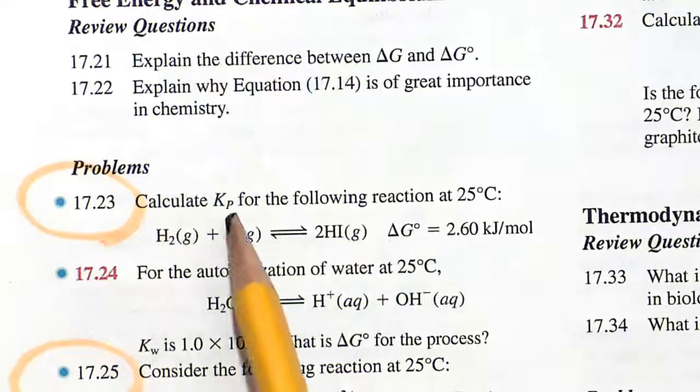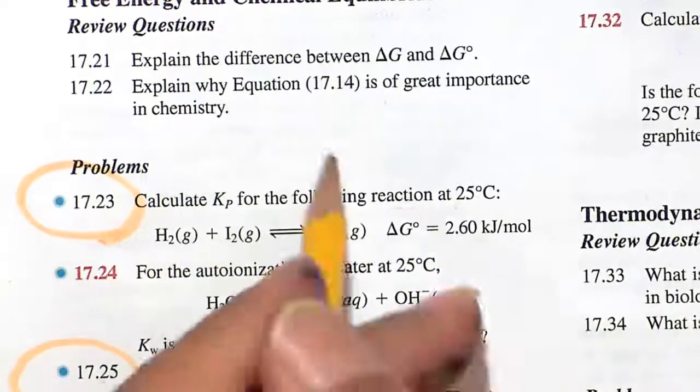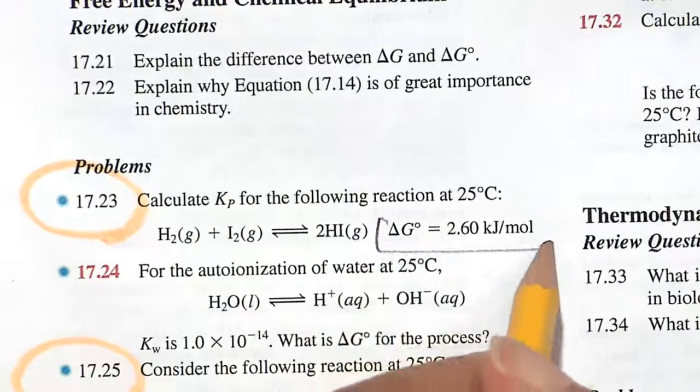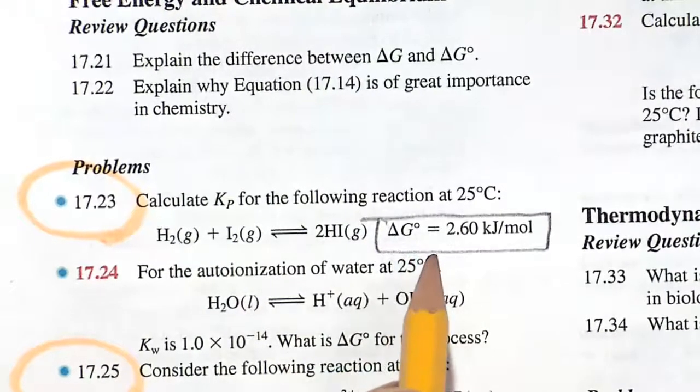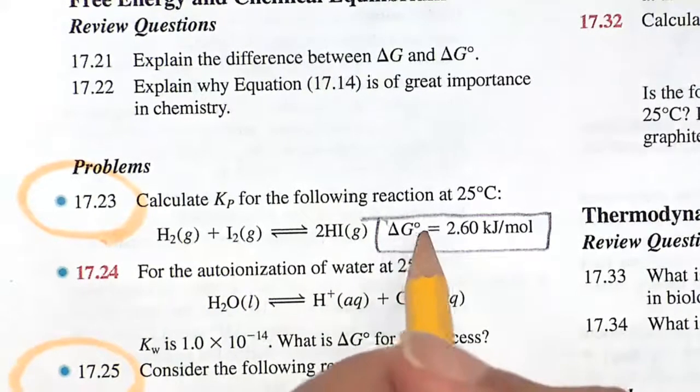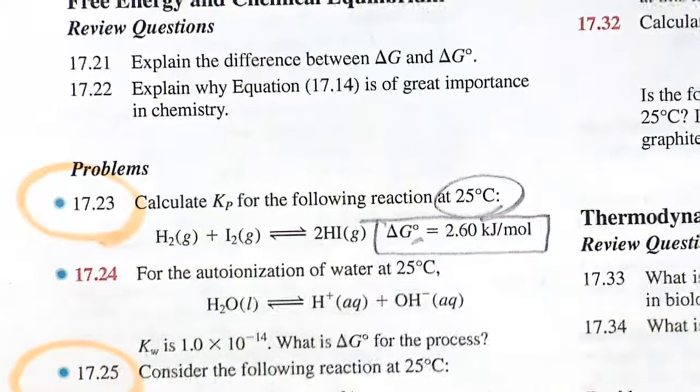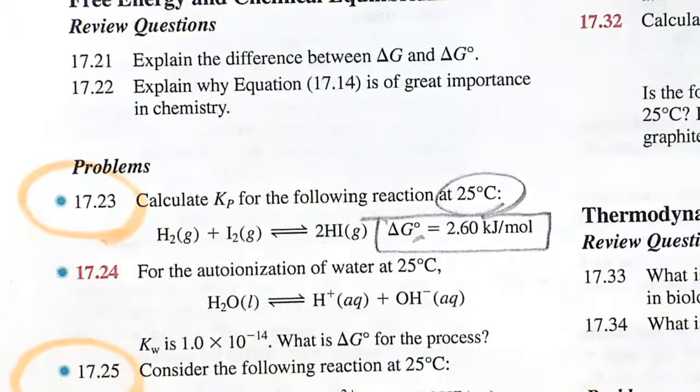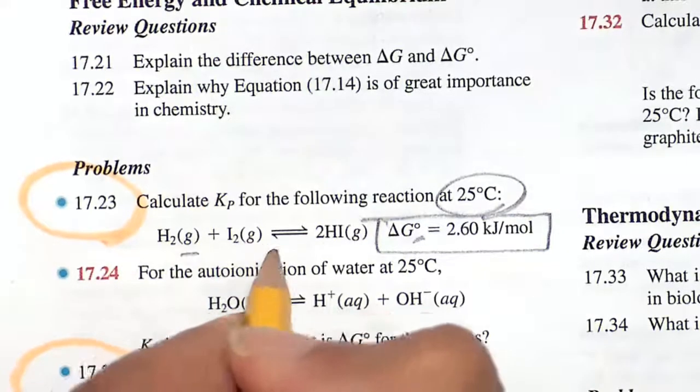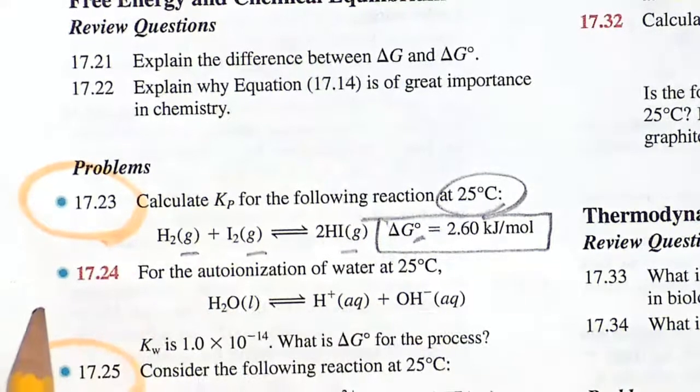In this video we will calculate the equilibrium constant Kp, given our delta G, Gibbs free energy, change in Gibbs free energy of the reaction. Notice we're talking about standard state here by that knot, which automatically by default implies 25 degrees C and pressure, because we're talking about gases here, of one atmosphere.